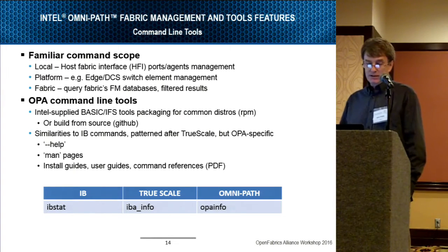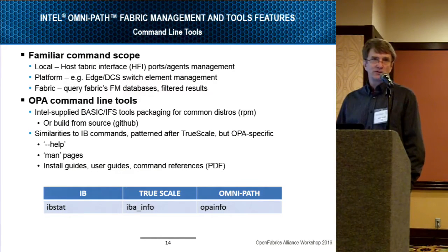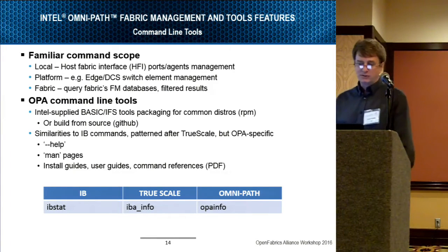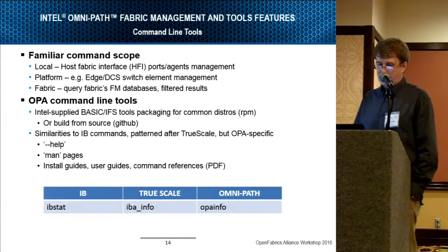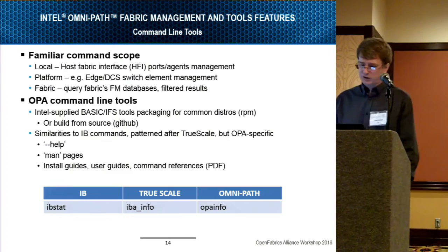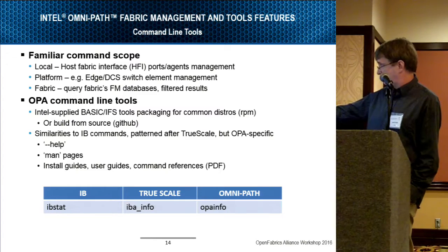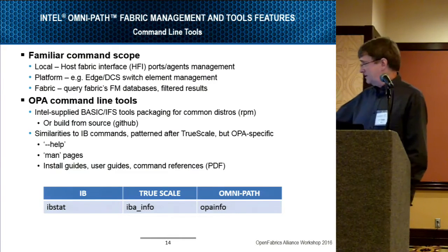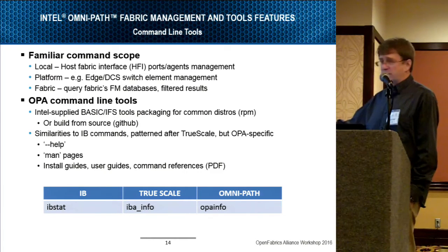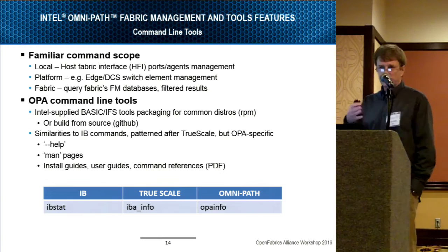The source is distributed as both a basic package and an IFS package. The IFS package has a couple of extra tools like top tools and some others that are privileged to run directly with the management nodes, while all the basic tools are also included in the IFS package. There are full descriptions on the website. We added extensive man pages — if you were a TrueScale user, you might have missed out on man pages, but they're all there now. There are also install guides, user guides, and command references. For TrueScale users, the 'iba_' prefix has been pretty much replaced by 'opa_'.